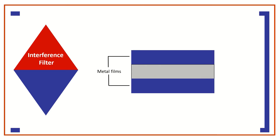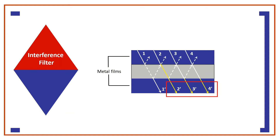When radiation strikes the first metallic layer, approximately half is transmitted and the other half reflected. The transmitted radiation undergoes a similar partition when it reaches the second layer of metal. If the reflected portion from the second layer is of the proper wavelength, it is partially reflected from the inner portion of the first layer in phase with the incoming light of the same wavelength. The result is constructive interference of that wavelength and destructive removal of most other wavelengths.